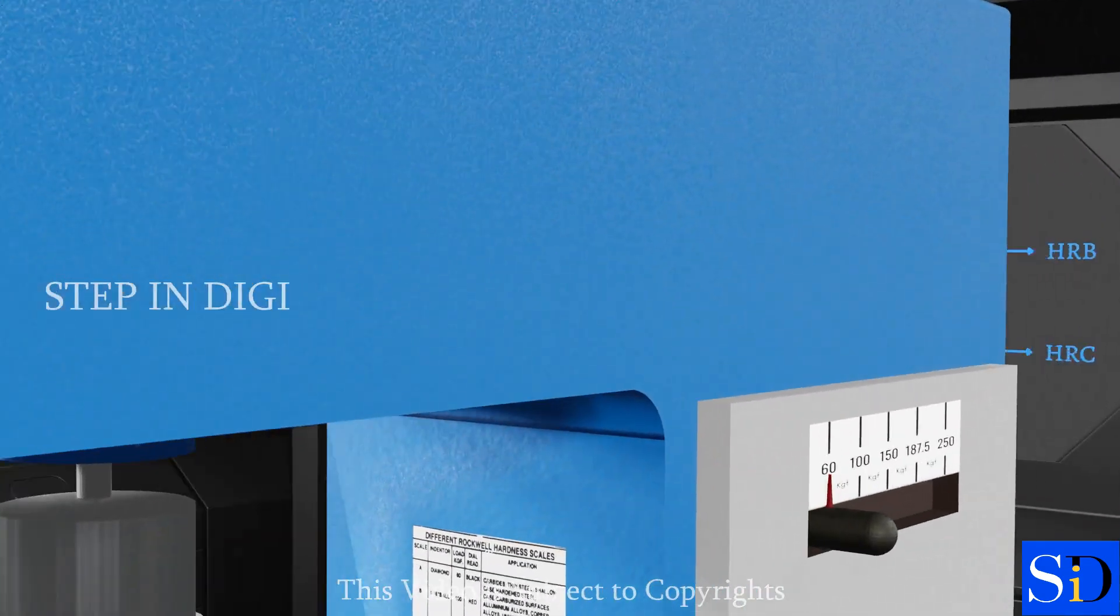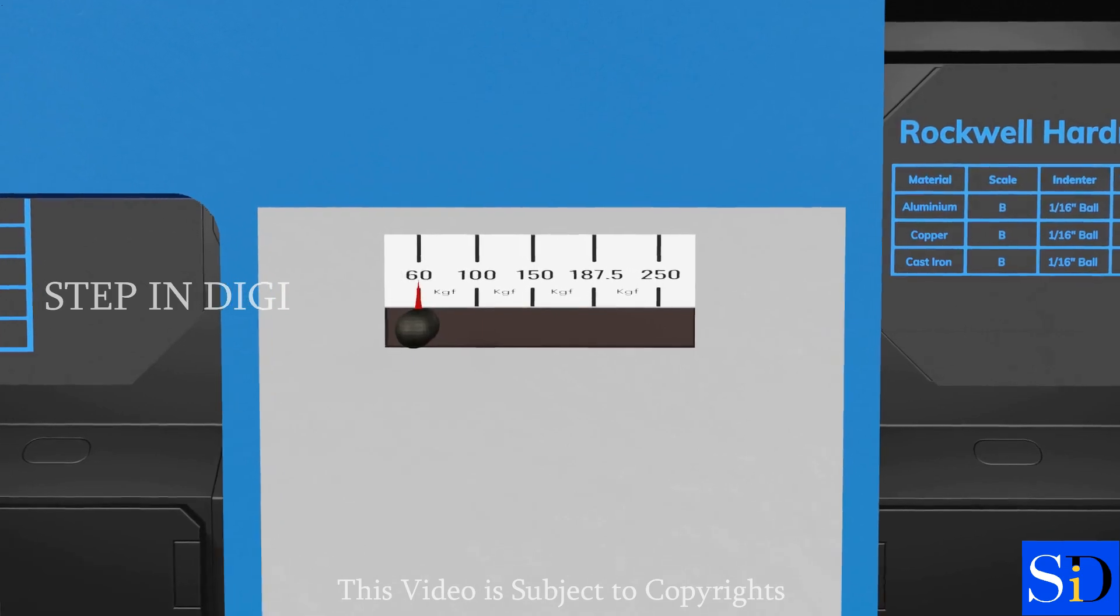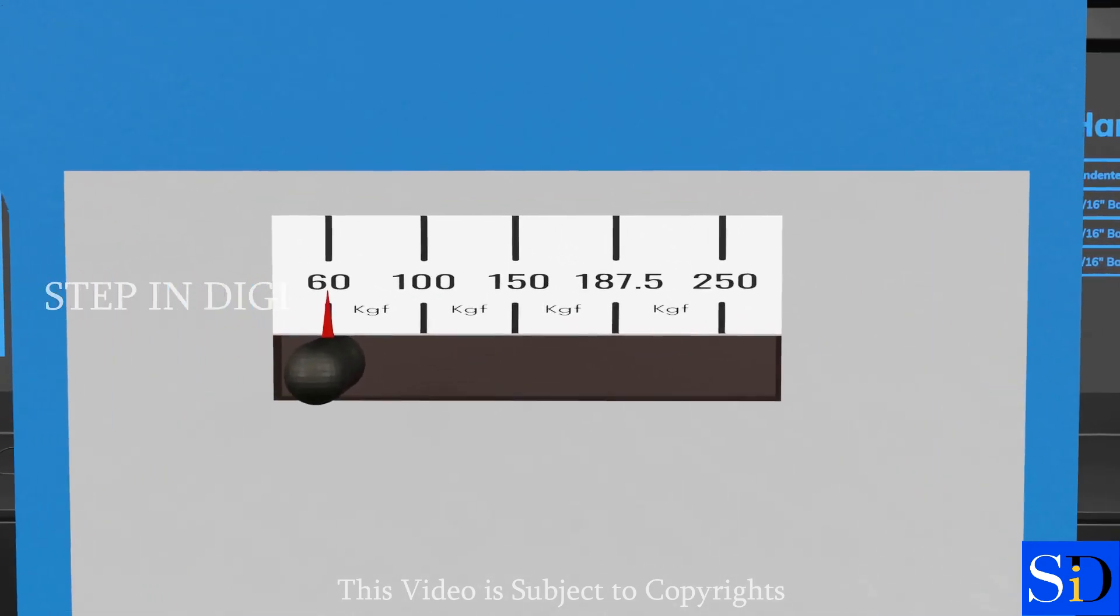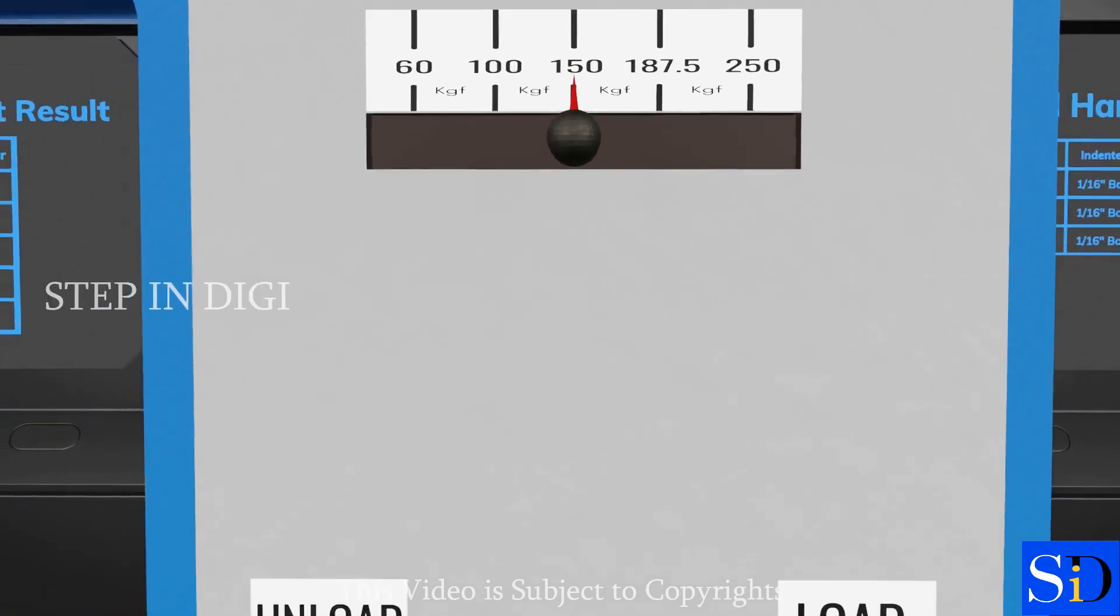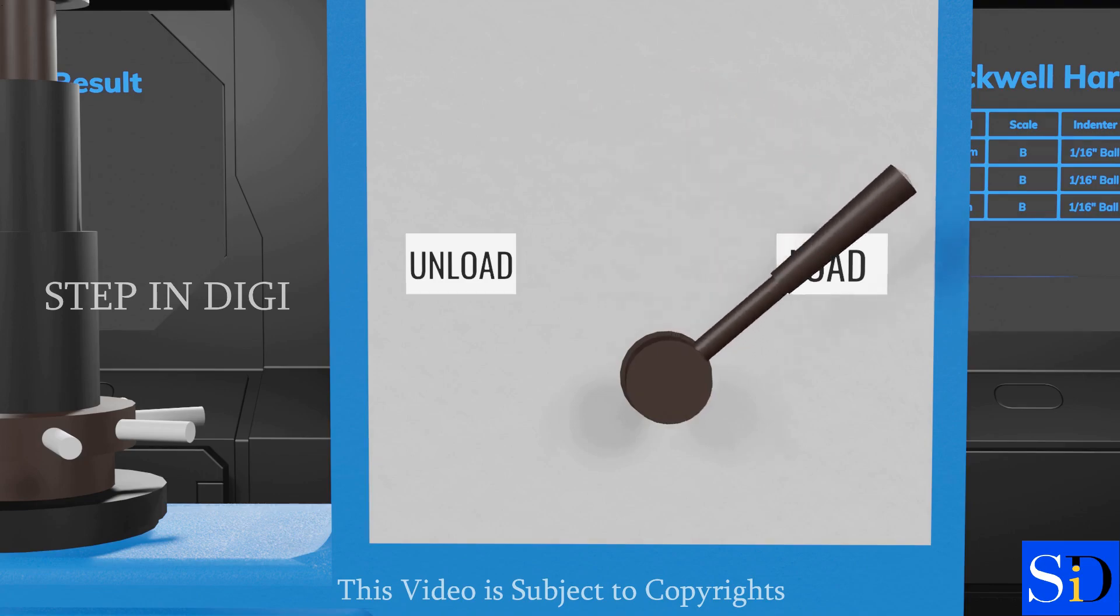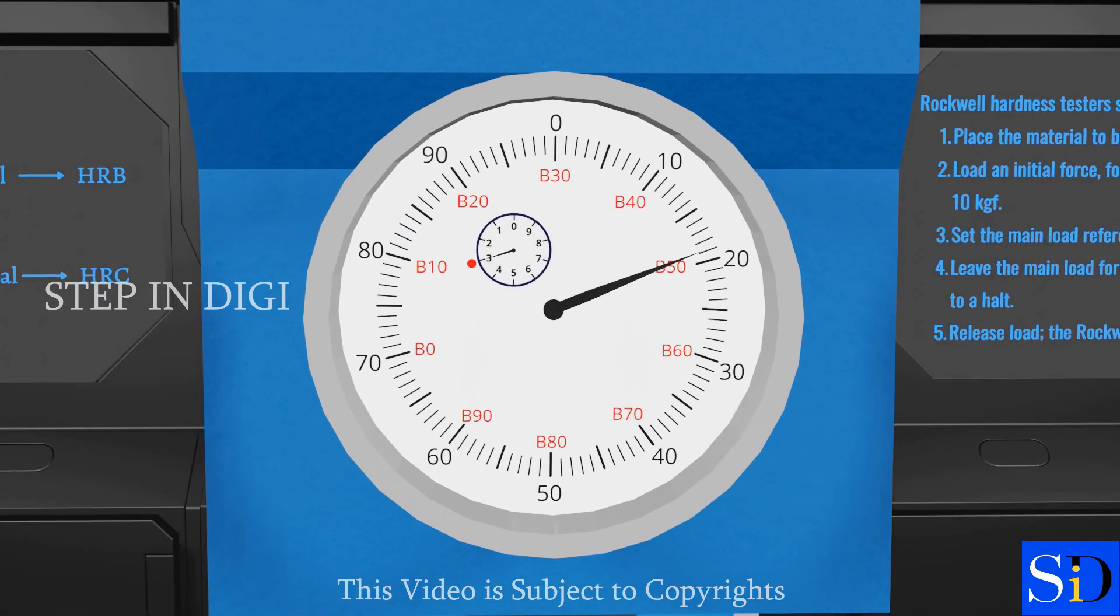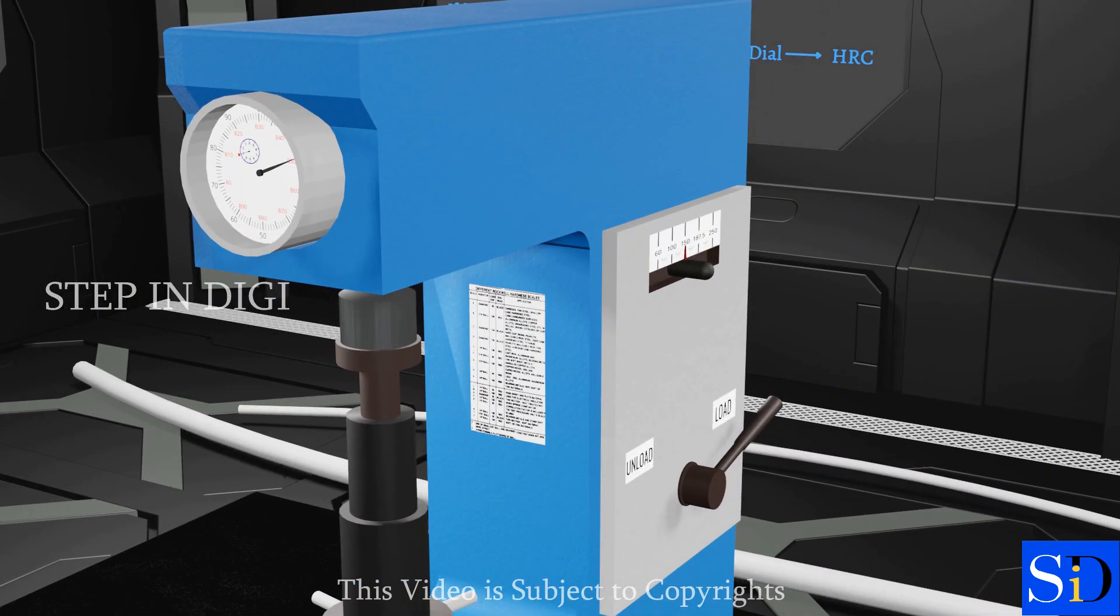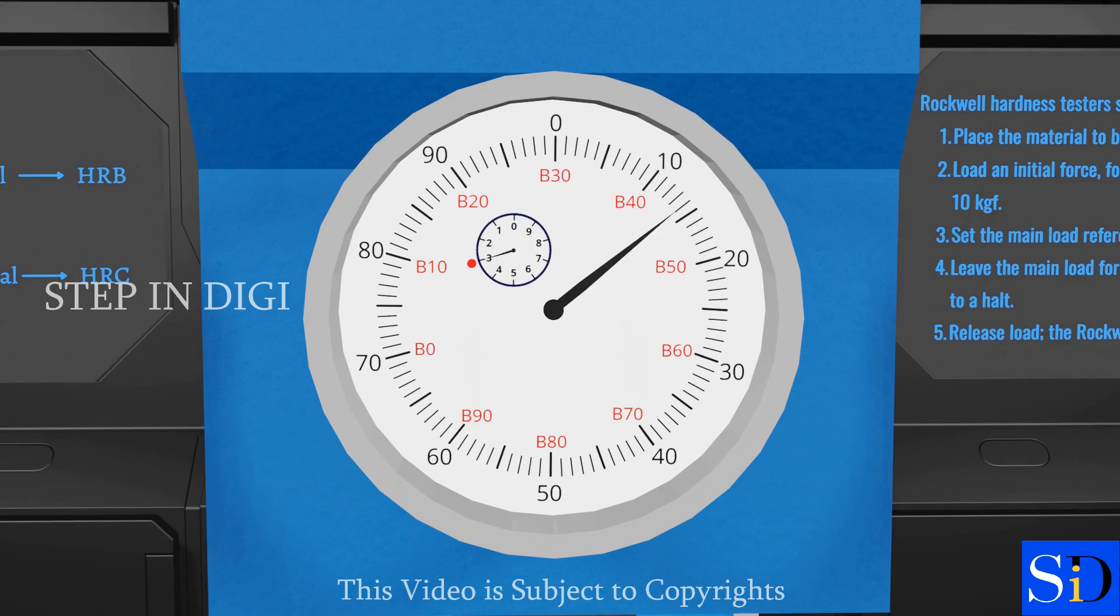According to the Rockwell hardness scale given on the machine, for stainless steel a load of 150 kgf has to be applied. Now initialize the load of 150 kgf using the switch given. Push the lever towards the load side gently, and leave the main load for a dwell time sufficient for indentation to come to a halt. Now, pull the lever back to unload position. Look at the dial and note down the reading.